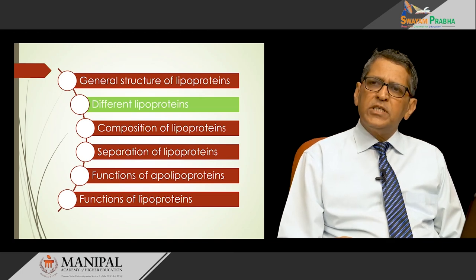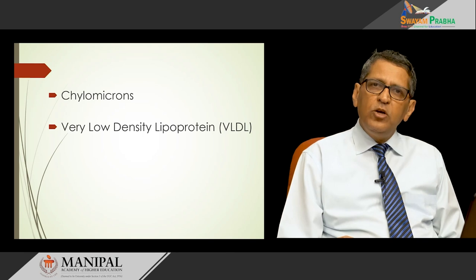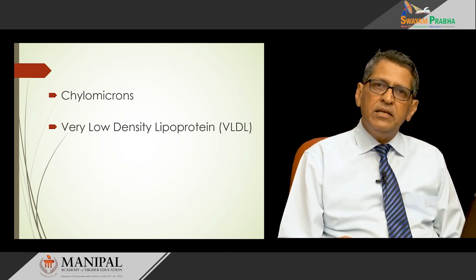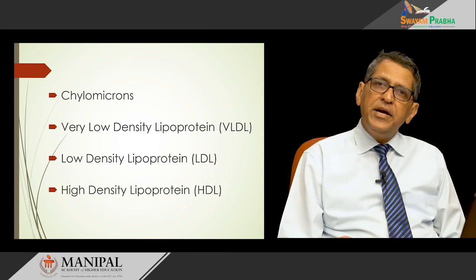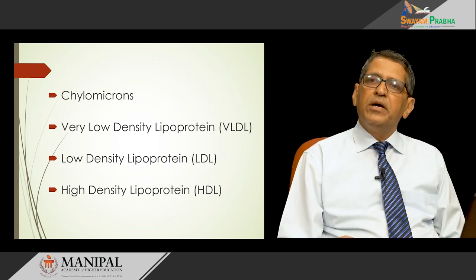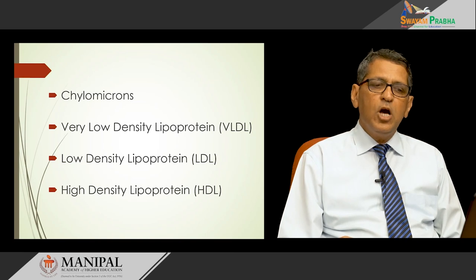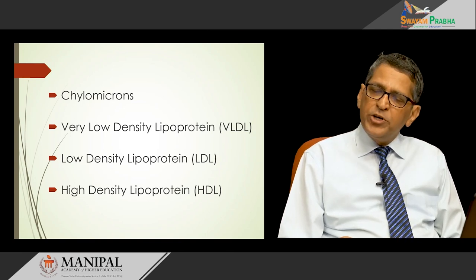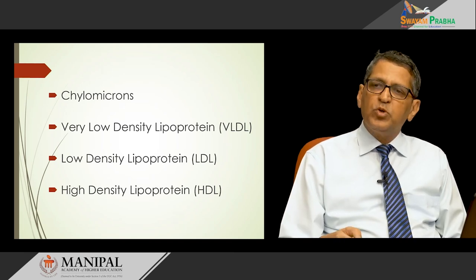There are four major lipoproteins present in the human system: chylomicrons, very low-density lipoproteins or VLDL, low-density lipoprotein or LDL, and high-density lipoprotein or HDL. These different lipoproteins differ with respect to their site of synthesis, composition, electrophoretic mobility, size, density, different apoproteins present in them, diameter, and their function.